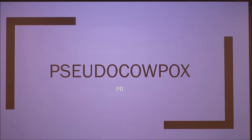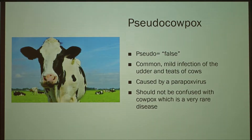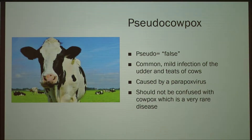Today I'm going to be talking about pseudo cowpox in cattle. 'Pseudo' means false, so another name for pseudo cowpox is false cowpox. Pseudo cowpox is the most common infectious cause of teat disease in cattle. It's a mild infection of the udder and teats in cows, and in some cases it can also be seen in sheep.